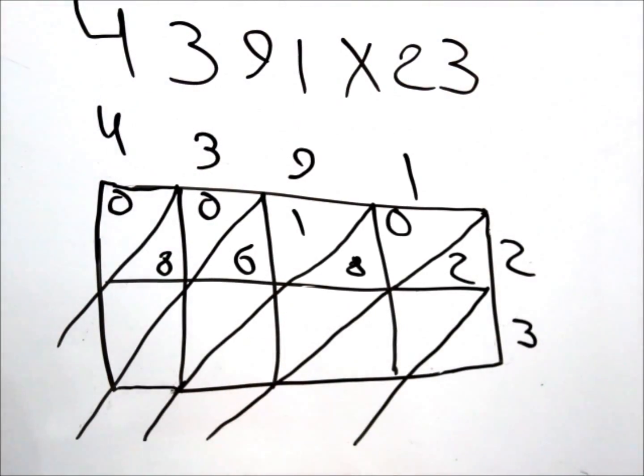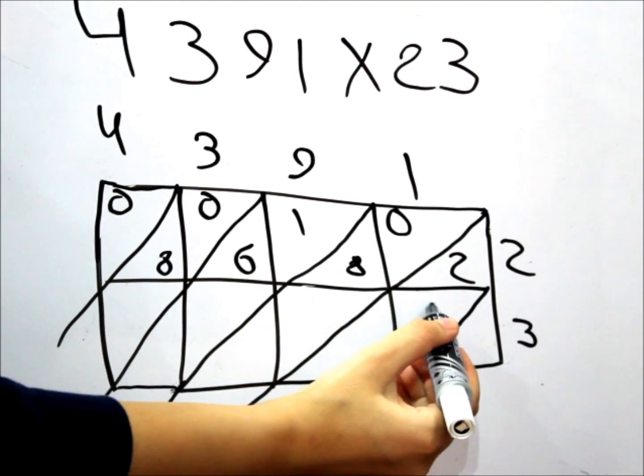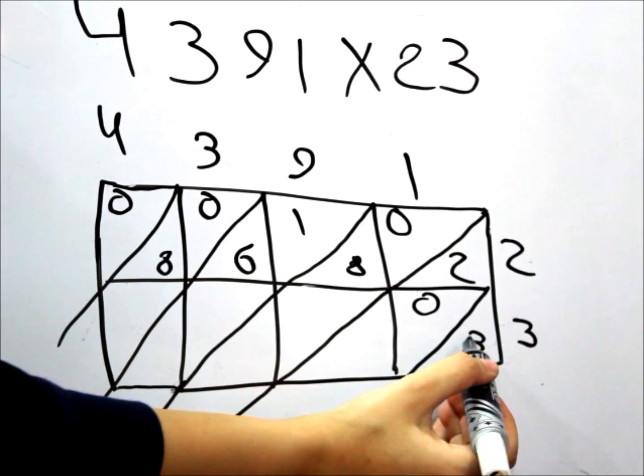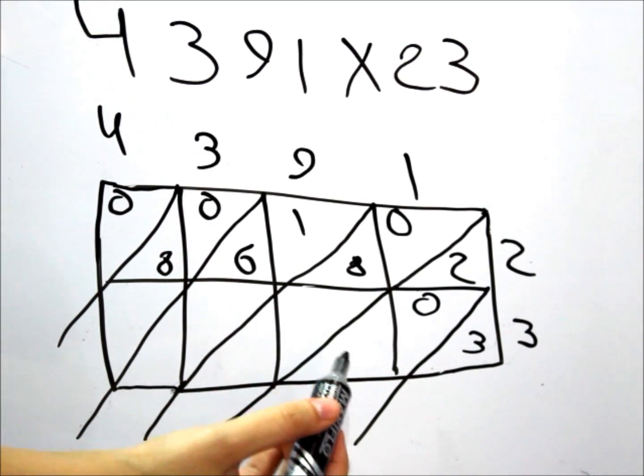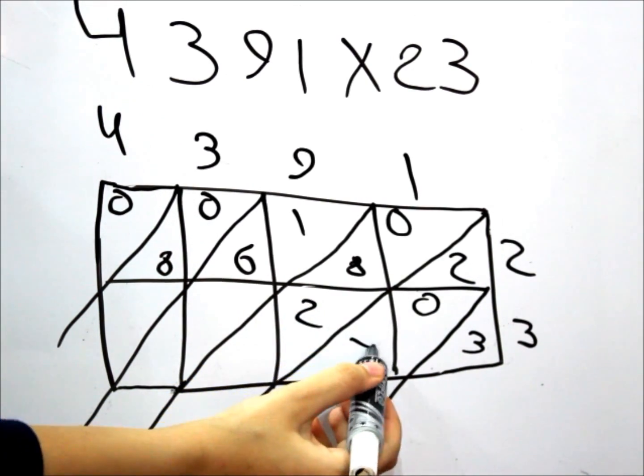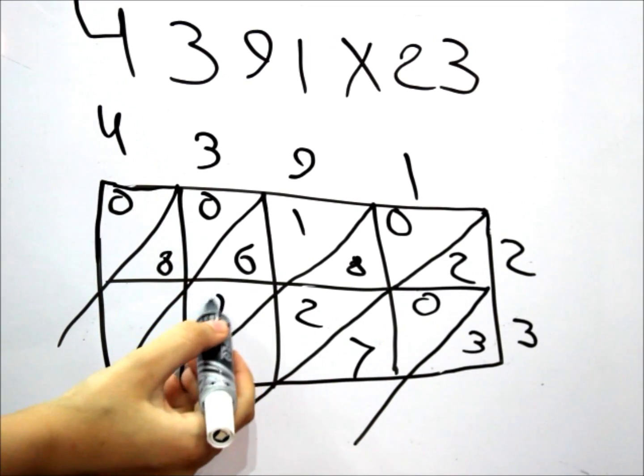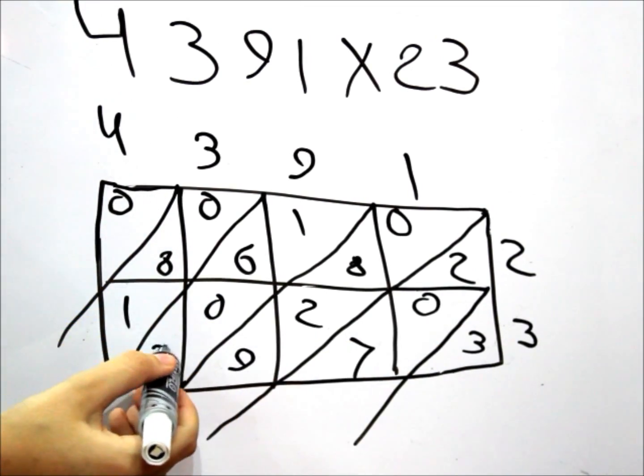And now, we're going to also do the same thing with the second row. We're going to take the first square, and that would be 3 times 1. The 0 over here and the 3. The second square, 3 times 9, and that would be 27. 3 times 3, 0, 9. 3 times 4 is 12.